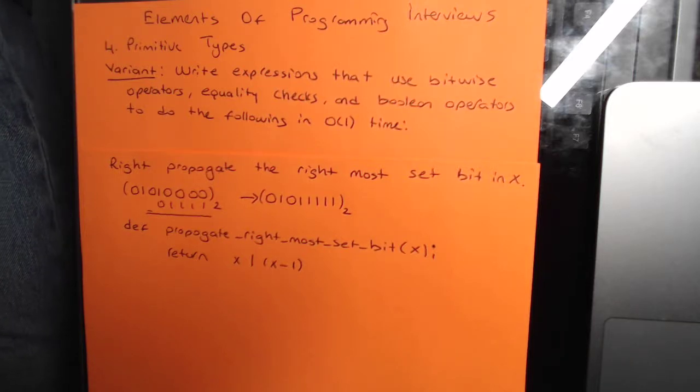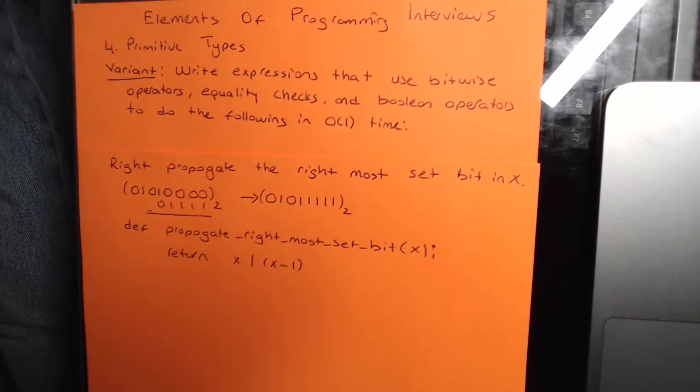Welcome to pen and paper programming. We are continuing to look at problems in Elements of Programming Interviews book in Chapter 4, Primitive Types, and the first variant question.